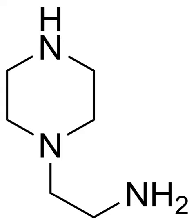Aminoethylpiperazine is a derivative of piperazine. This ethylamine contains three nitrogen atoms: one primary, one secondary, and one tertiary.